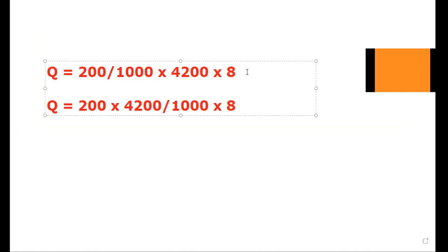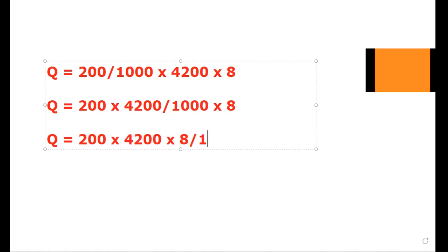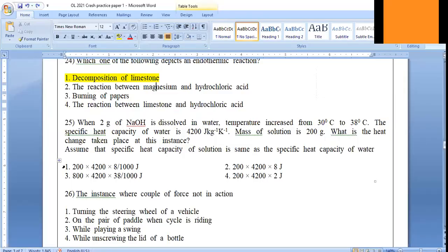If you write 200 into 4200 over 1000 into 8, same answer will come. Our thousand is the denominator, so it can be written in any place - no problem. This is the idea behind that question. It is the first answer.